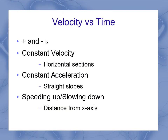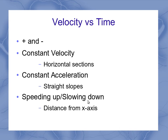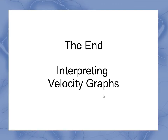So as a review: your positive and negative tells you which direction you're moving — forward or backward. Any horizontal sections indicate constant velocities. If you've got a straight slope, you've got a constant acceleration, with upward slopes being positive accelerations and downward slopes being negative accelerations. And you can figure out speeding up and slowing down in terms of your distance from the x-axis — speeding up means you move further from the axis, slowing down means you're moving closer to that axis. This gives you an overview of what to look for when you're interpreting those velocity graphs.